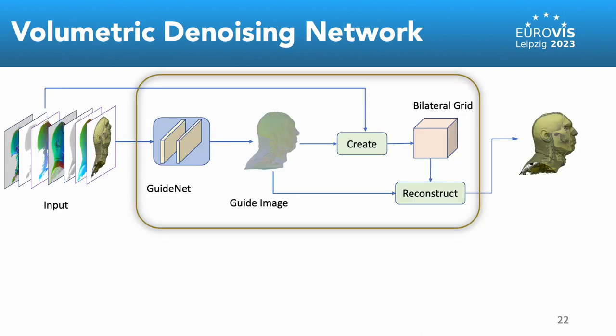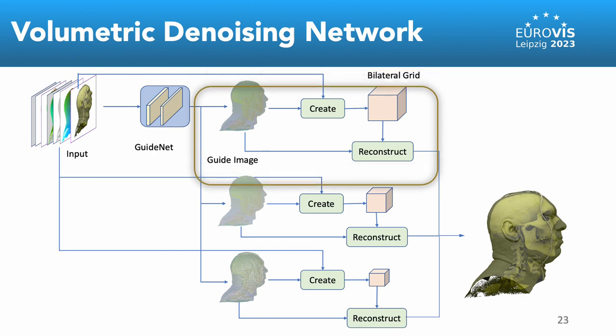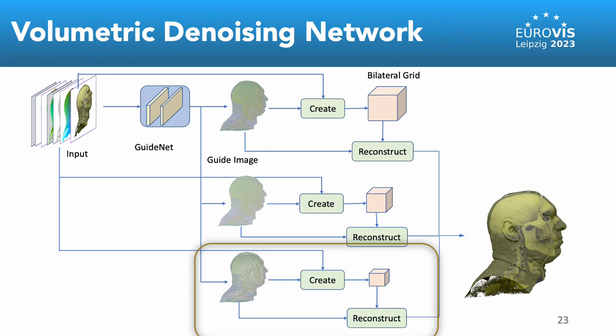Finally, the mean square loss is computed between the output denoised image and the target image which is backpropagated to learn the weights of the neural network. This represents a framework with a single bilateral grid. To perform filtering at different scales, we use three levels of bilateral grids with different sampling factors and use a per-pixel weighted combination of these processed images.